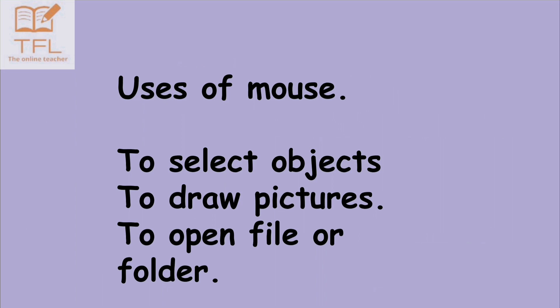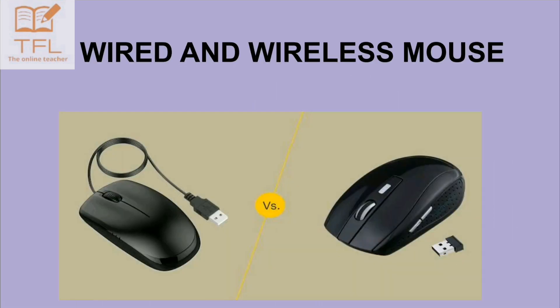We will save the file and we will open the picture — we are using the mouse. So to select objects, to draw pictures, to open a file or folder, we are using the mouse.